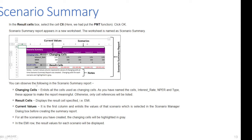In the Scenario Summary report you can observe the following. 'Changing Cells' lists all the cells used as changing cells — we have three: interest rate, n_pair, and type. Because you named the cells, these names appear to make the report meaningful and more readable; otherwise only cell references would be listed.